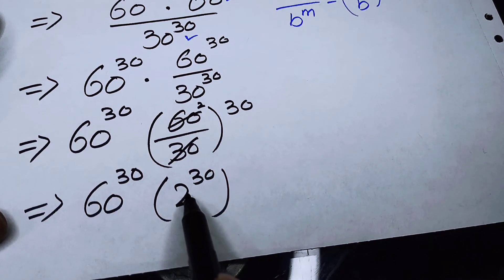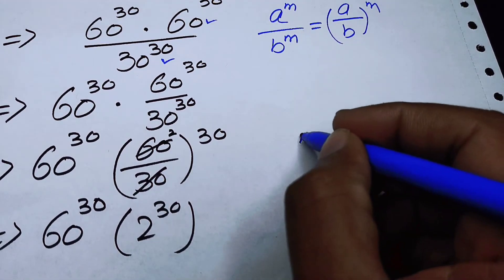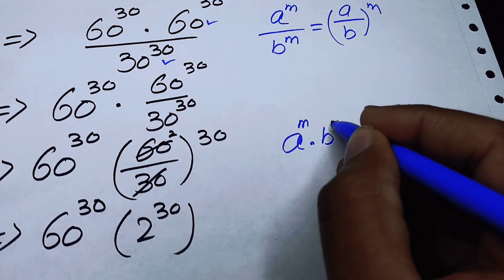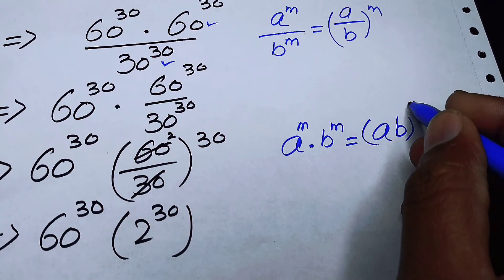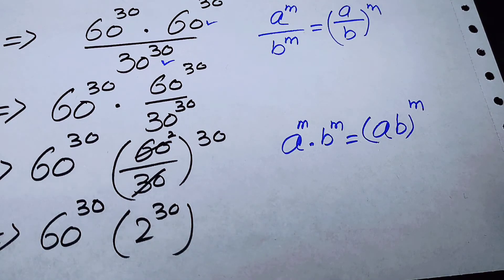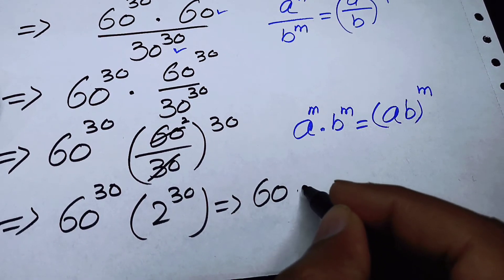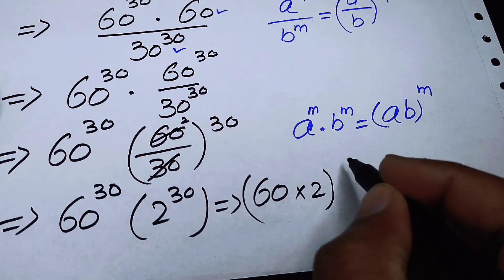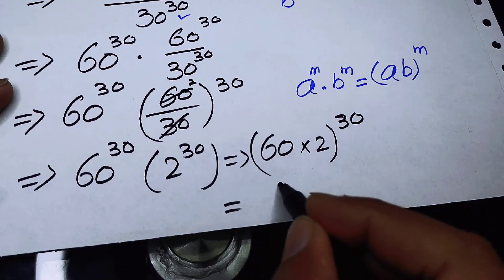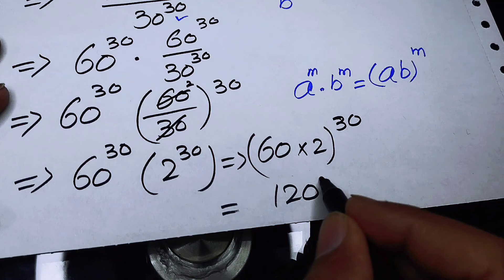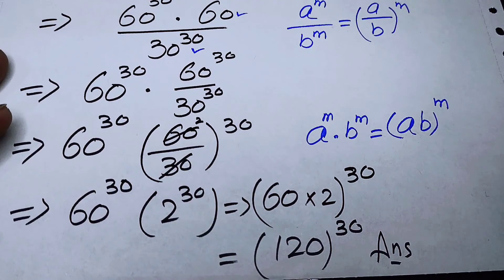Now we can see that both terms have the same exponent, so we apply another exponent law: a to the power of m times b to the power of m equals (ab) to the power of m. Combining the bases: 60 multiplied by 2 equals 120, giving us 120 to the power of 30. This is our final answer.